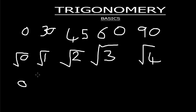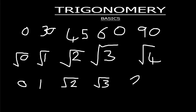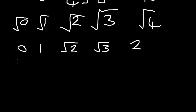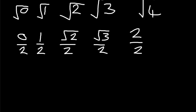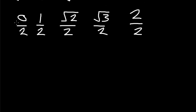So the square root of zero gives zero. The square root of one gives one. The square root of two gives root two — that's an irrational number. The square root of three is also irrational, so we leave it as root three. The square root of four gives two. From there, you quickly divide all the numbers by two.